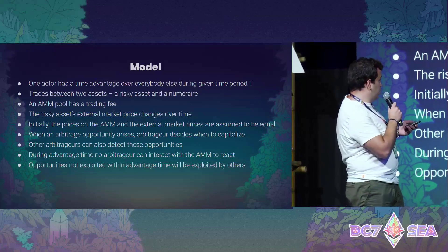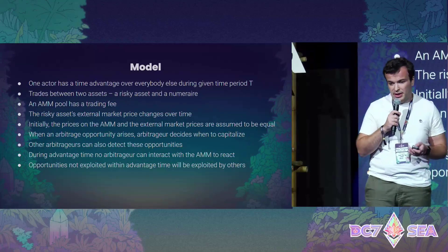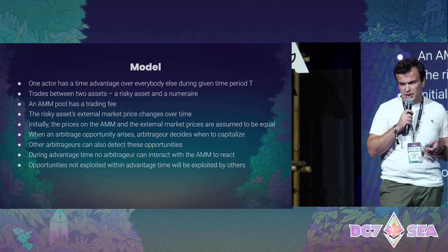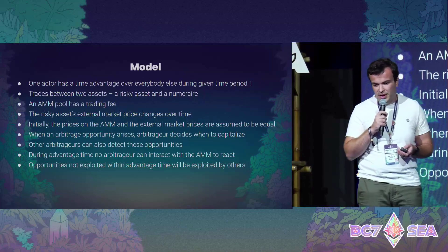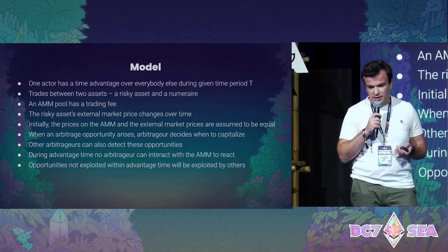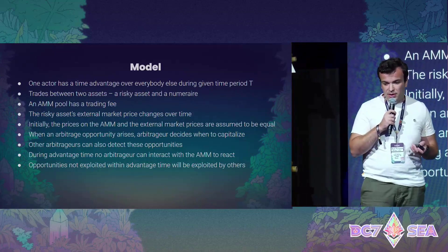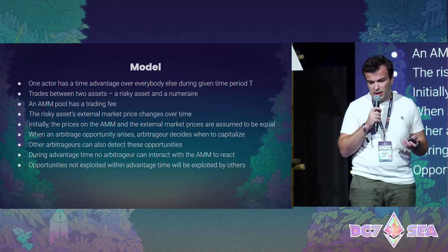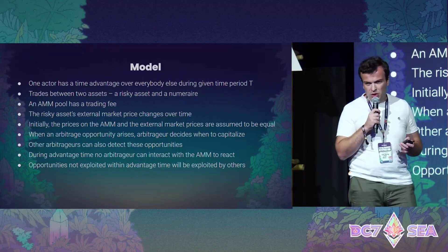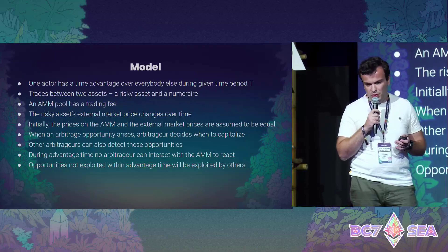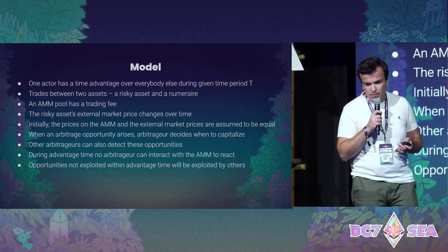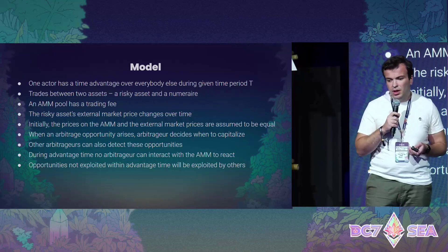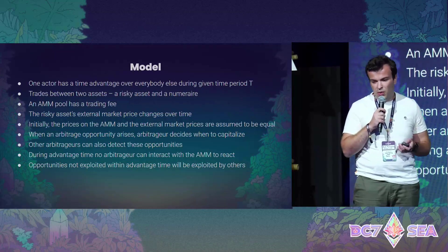So the model looks like this. We have one player that has this time advantage during time t. There are two assets: one risky asset and the numeraire — think of it as ether as the risky asset and USD as the numeraire, or the other way around. The AMM has a trading fee, and the risky asset's price changes on the outside market. Initially we assume the prices are the same, and once an arbitrage opportunity arises on the outside market — so the price moves — the arbitrageur needs to decide when to capitalize on it.